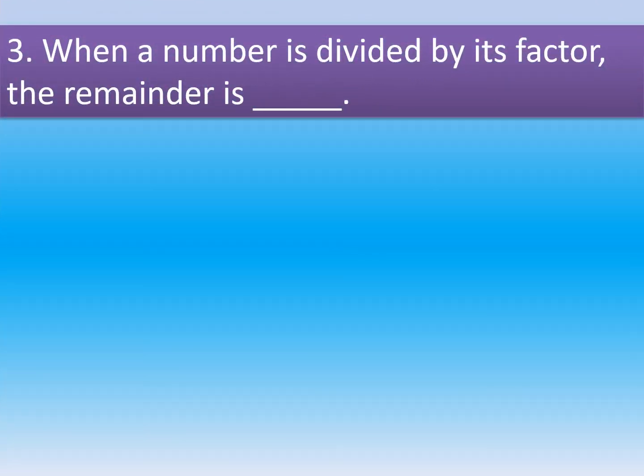The correct answer is Option A, 0. When a number is divided by its factor, the remainder is definitely 0.